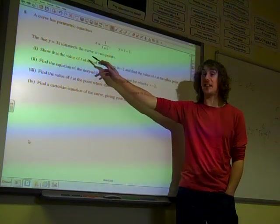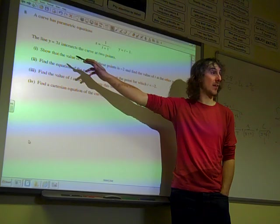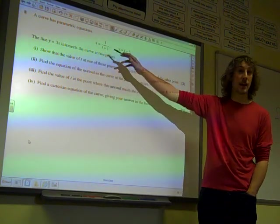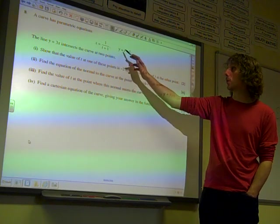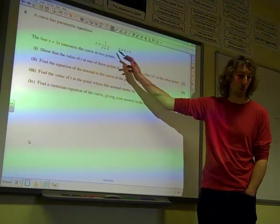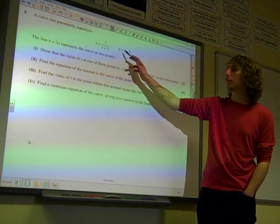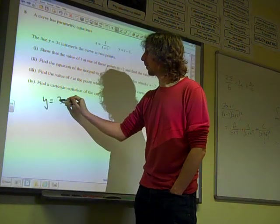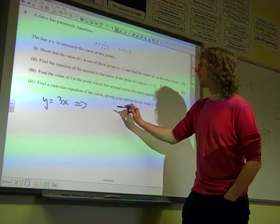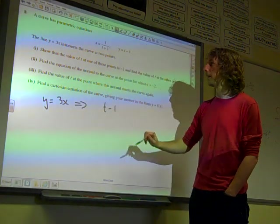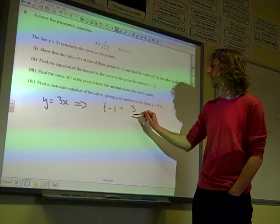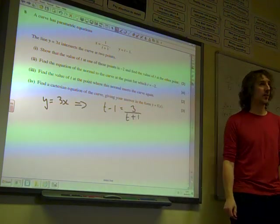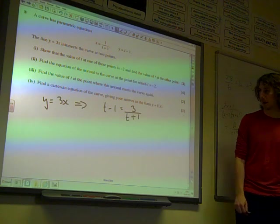So this is actually just as easy as it looks. If we're saying that y equals 3x, then let's just set this up. So y equals 3x implies that y, which is t minus 1, equals 3 times x, which is 3 times 1 over t plus 1. There's a great start.